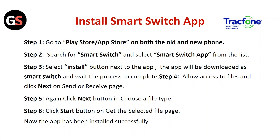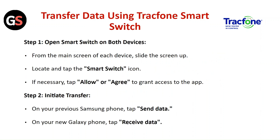Now the app has been installed successfully. Transfer Data Using the Track Phone Smart Switch. Step 1: Open Smart Switch on both devices. From the main screen of each device, locate and tap the Smart Switch icon. If necessary, tap Allow or Agree to grant access to the app.